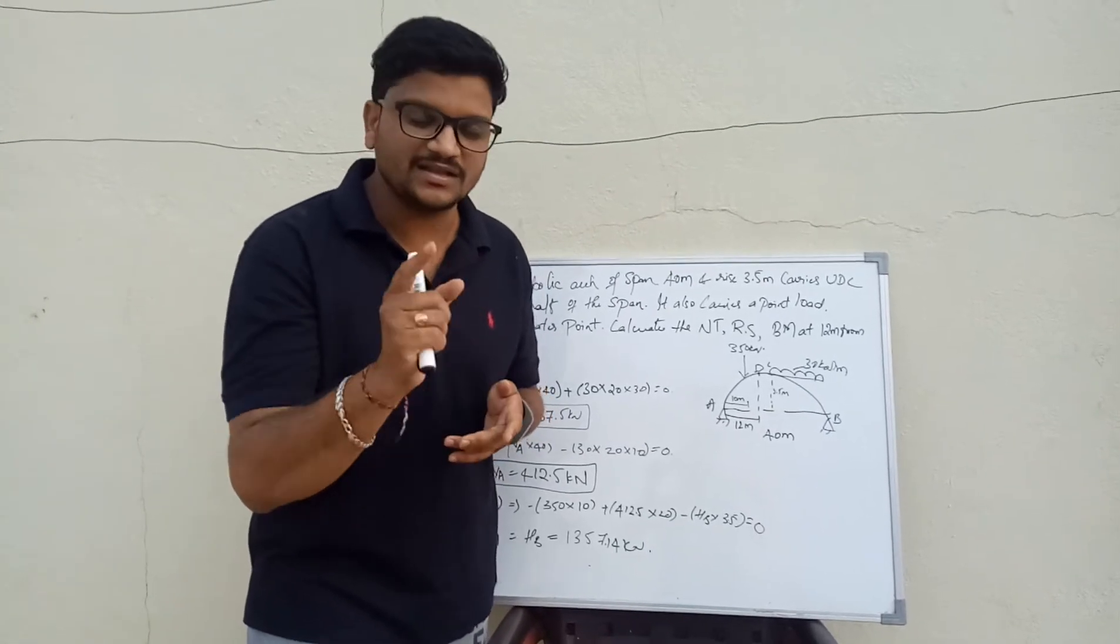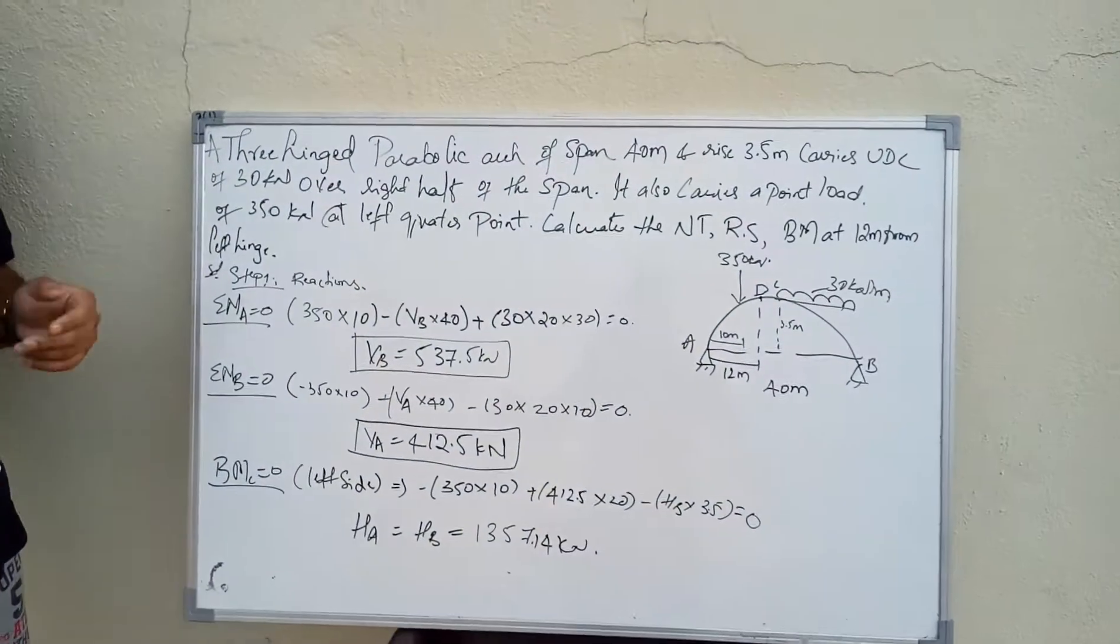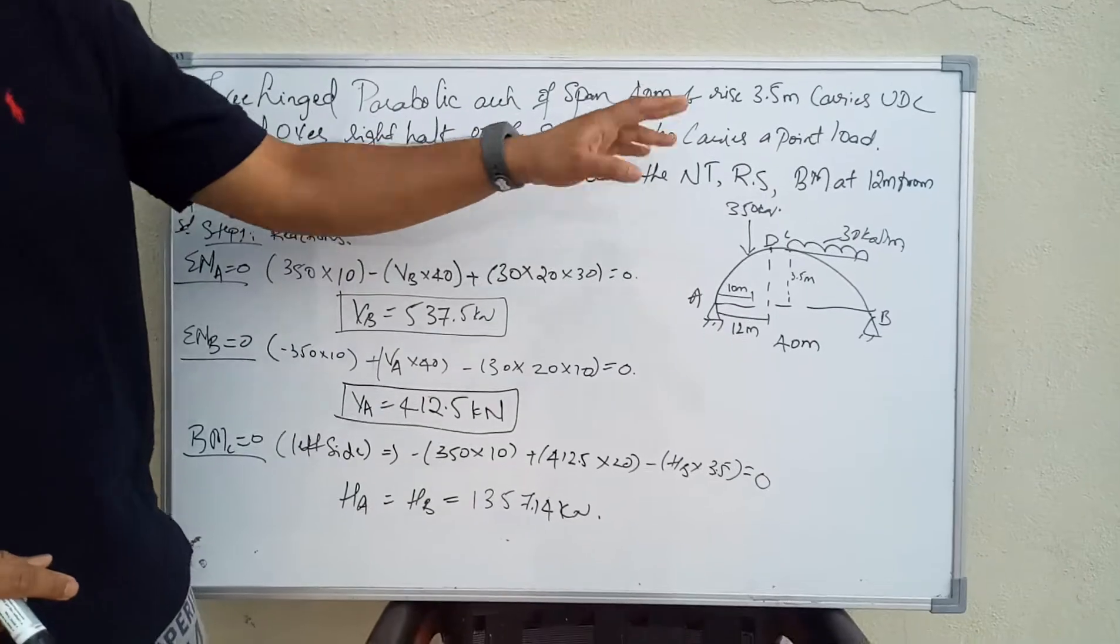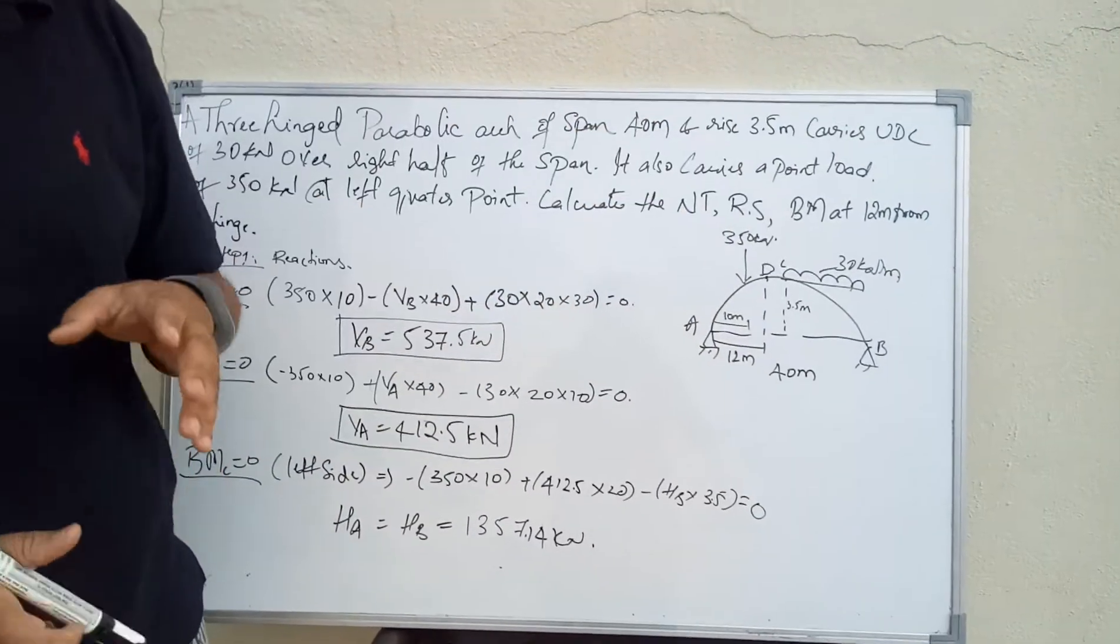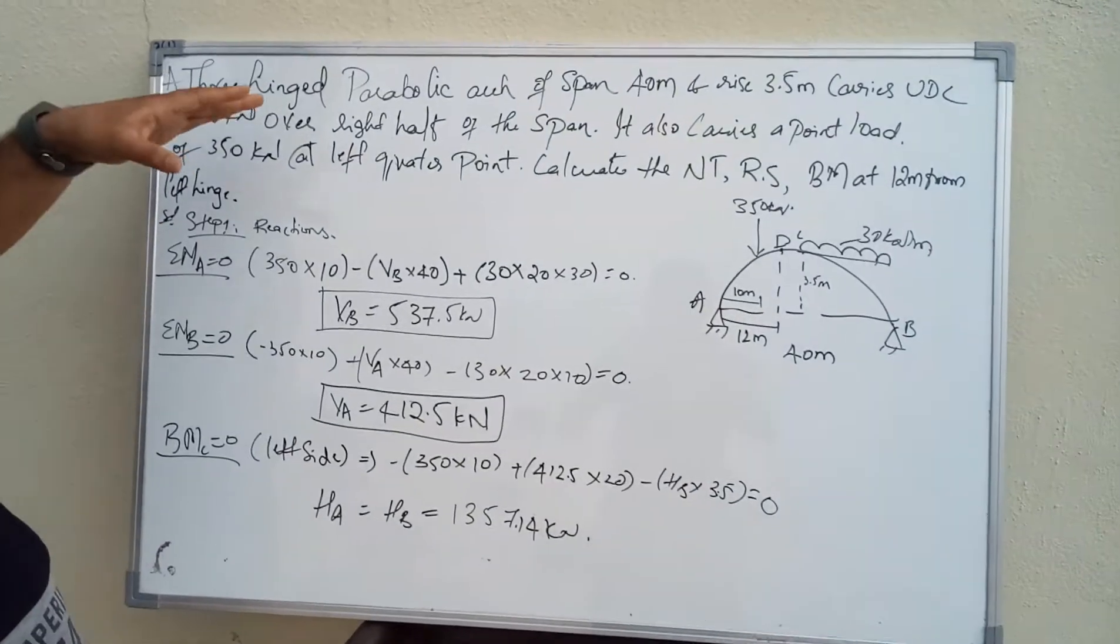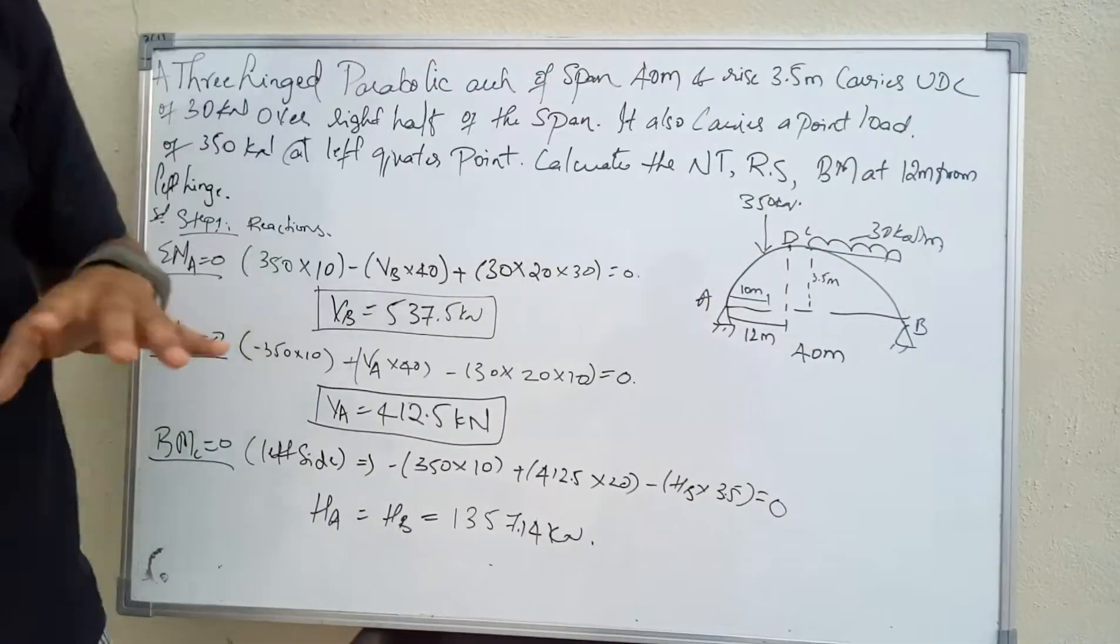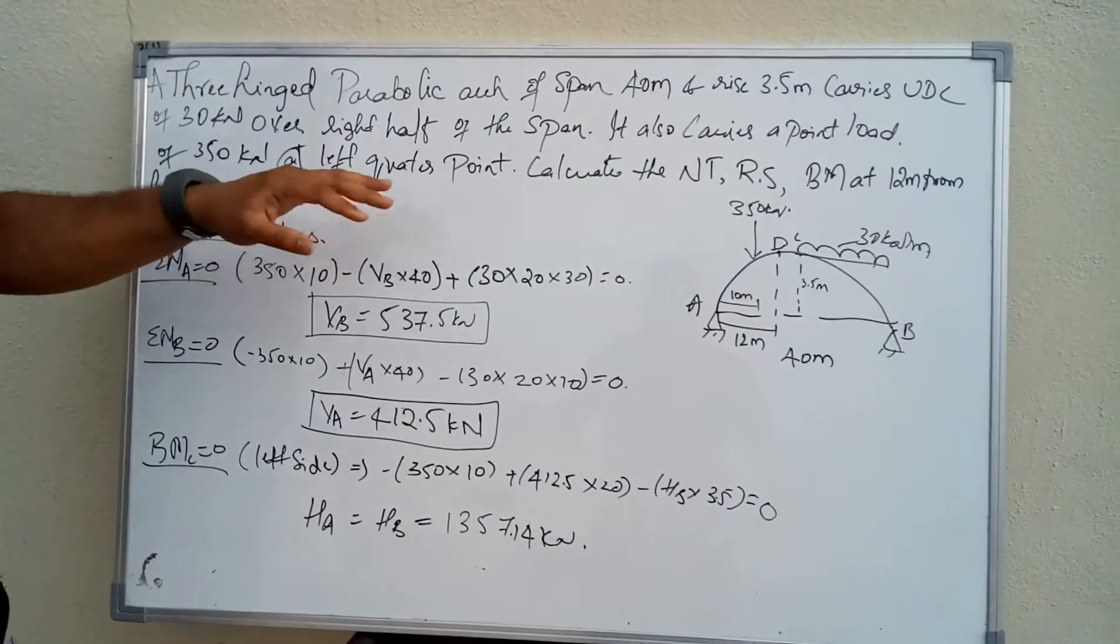The problem is about a three-hinged parabolic arch of span 40 meters and rise 3.5 meters. It carries a UDL of 30 kilonewtons over the right half of the span. It also carries a point load of 350 kilonewtons at the left quarter point.